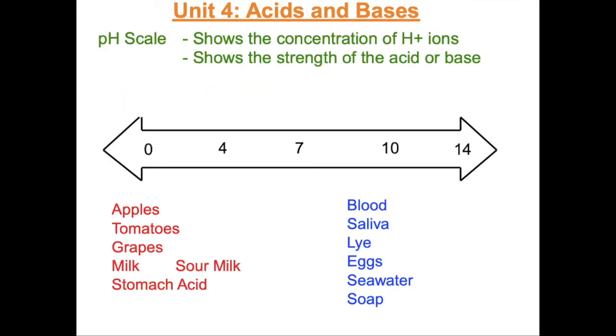The pH scale is used to determine the strength of an acid or a base. 7 is neutral, and it's neither acidic nor basic. Pure water is neutral. We know if the pH is less than 7, then it's an acid, and if the pH is above 7, then it's a base.